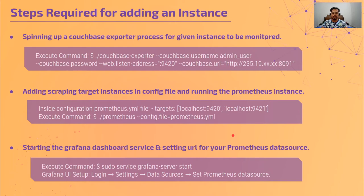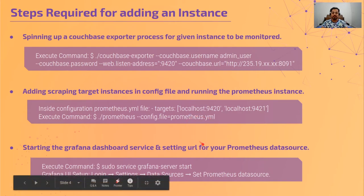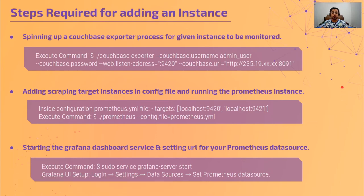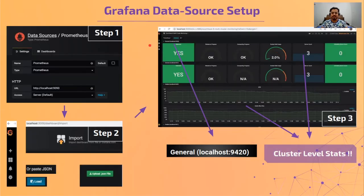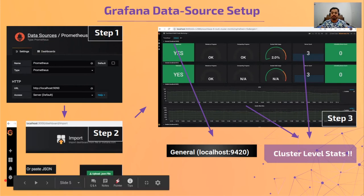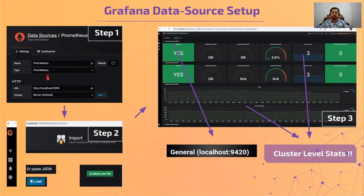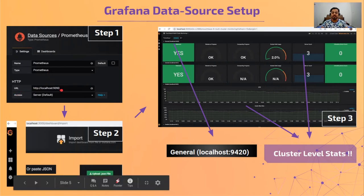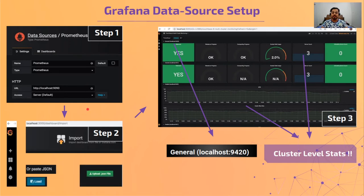If we remove an instance, Prometheus will still search for that target. Finally, we add a Grafana dashboard data source and provide the corresponding dashboard file. This can be done in three steps: clicking the settings button on the left toolbar, selecting data sources and adding Prometheus credentials, then uploading the corresponding dashboard JSON file. Key point: all stats here are at cluster level only.